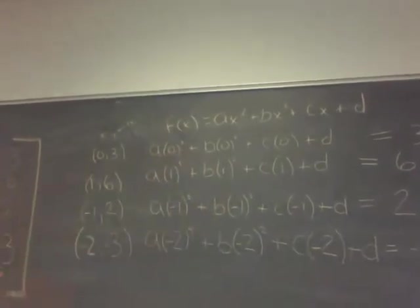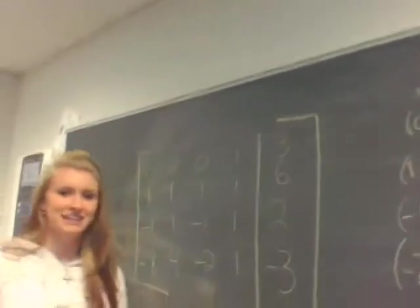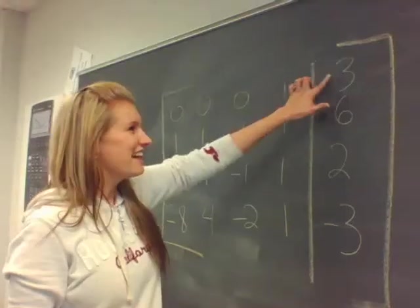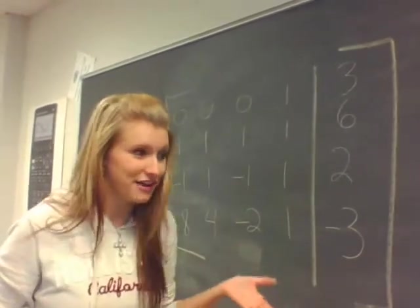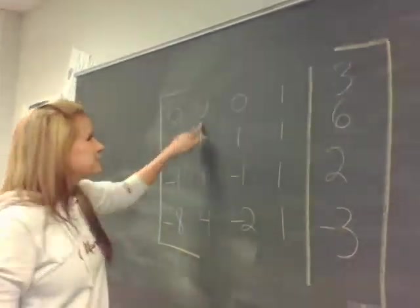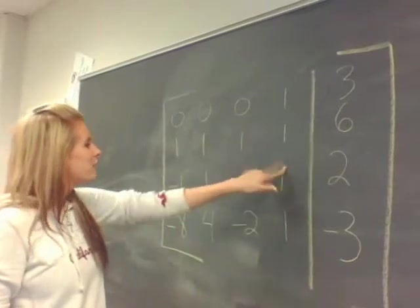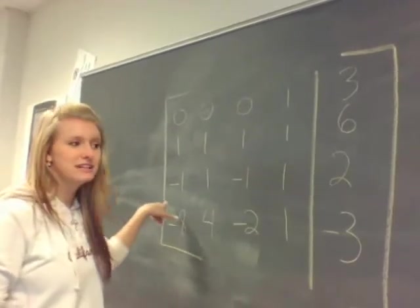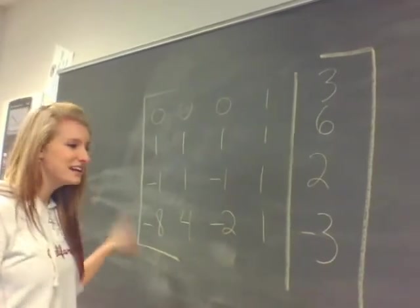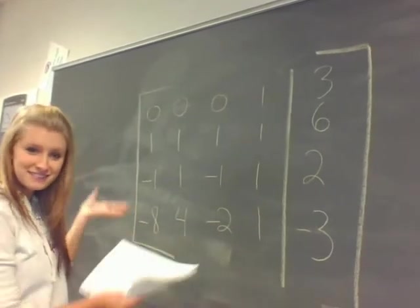So then come over here to my matrix. Okay, good enough. And then this is all the f(x)'s, which were the y values. And then zero, zero, zero, one, one, one, one. And then when we plugged in a negative one, and then when we plugged in a negative two. That's what we get. There you go.